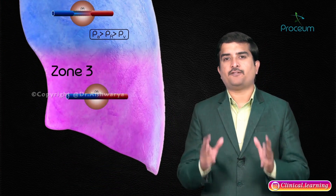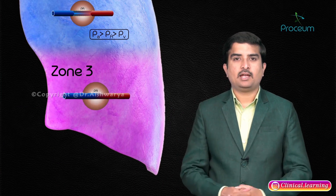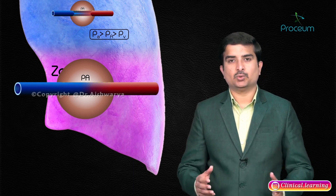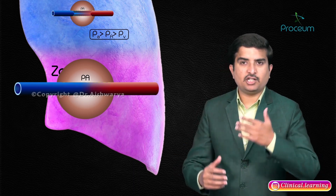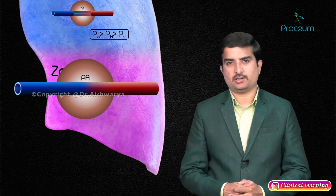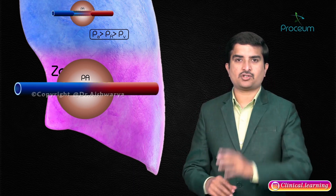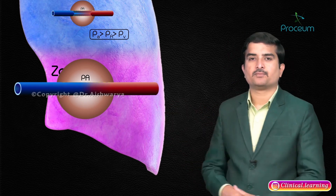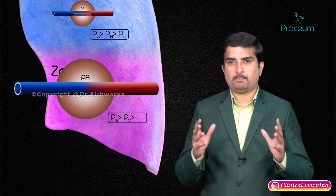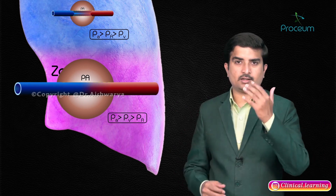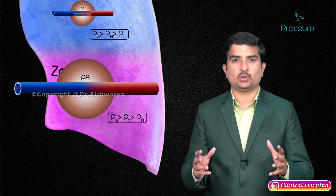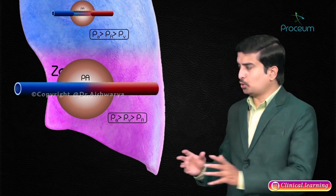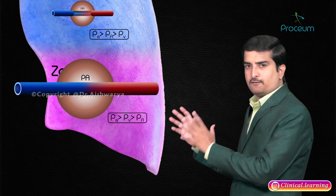Zone 3 is defined as those areas of the lungs where alveolar pressure falls below the pulmonary venous pressure. This zone has continuous blood flow during the cardiac cycle. This type of blood flow is characteristic of the lung bases, situated right below the heart, where pulmonary capillary pressures are greater than alveolar pressures during both systole and diastole. This means the pulmonary capillaries remain patent and open throughout the cardiac cycle to receive perfusion.